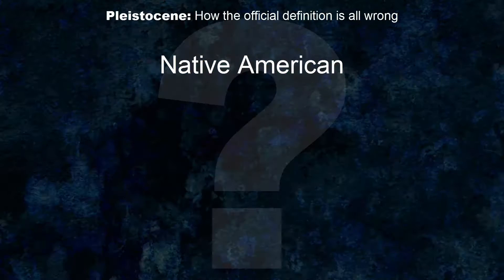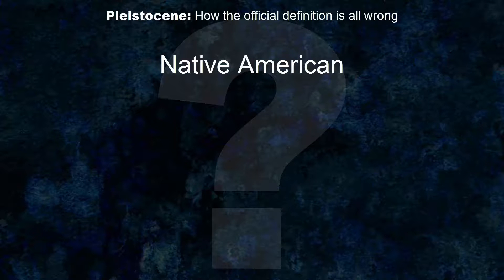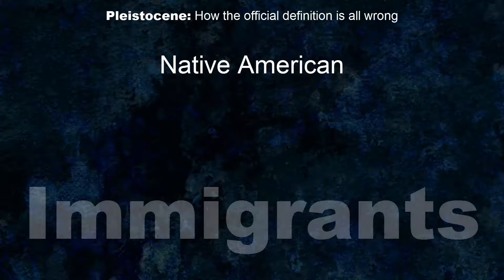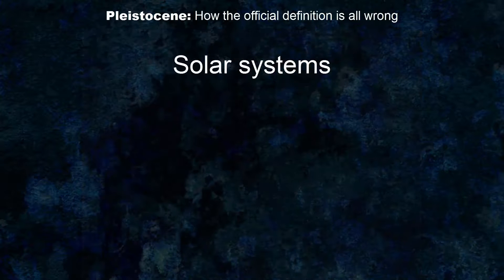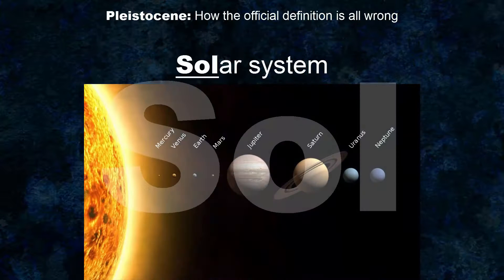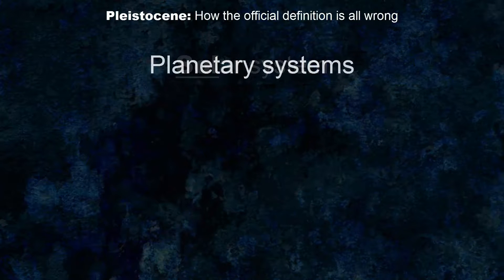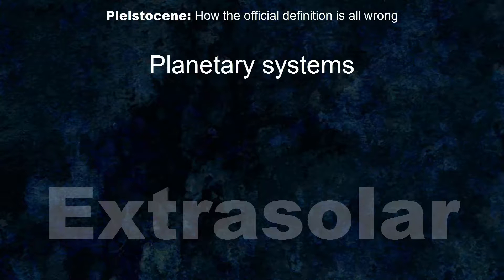And couldn't we call anyone born in America native to America? How long does a group of people have to live in a place to become native? All Americans are immigrants, if you go back far enough. Scientists these days also call extrasolar planetary systems solar systems, and that's entirely wrong. There's only one Sol — that's the name of our own sun — so there's only one solar system. Those other systems are merely planetary systems that are extrasolar, outside of the solar system. Simple.